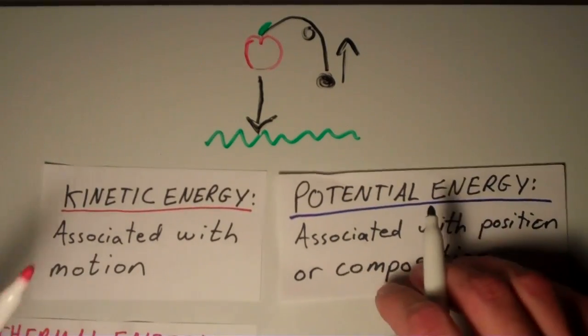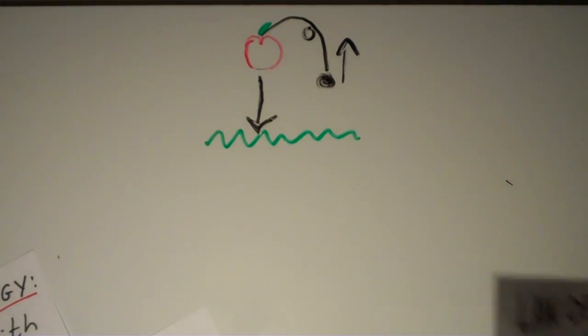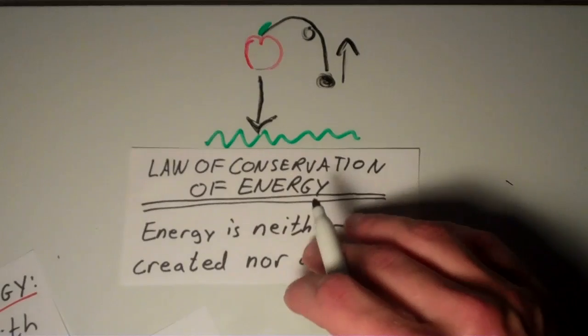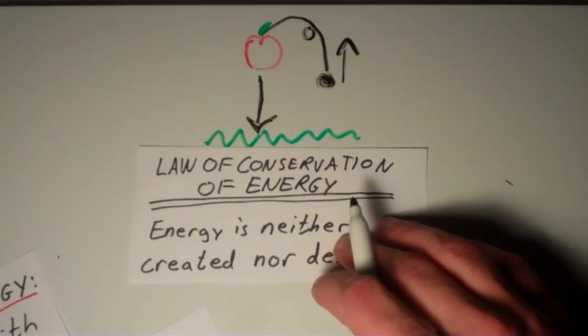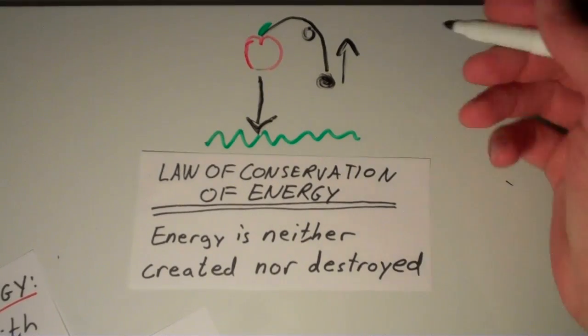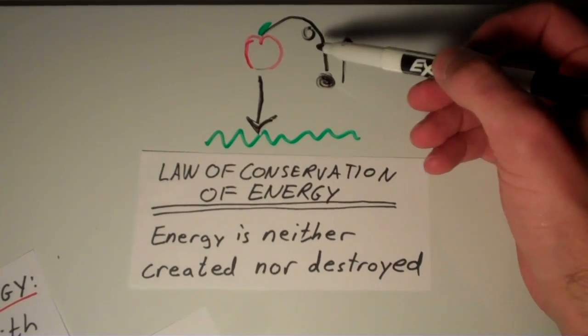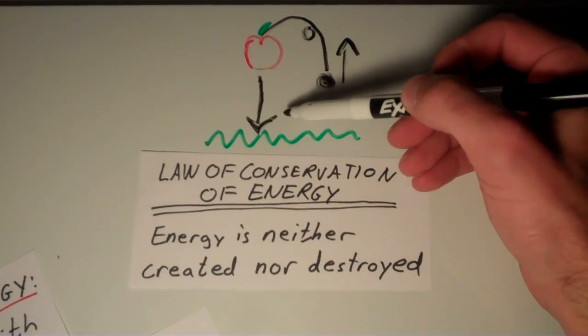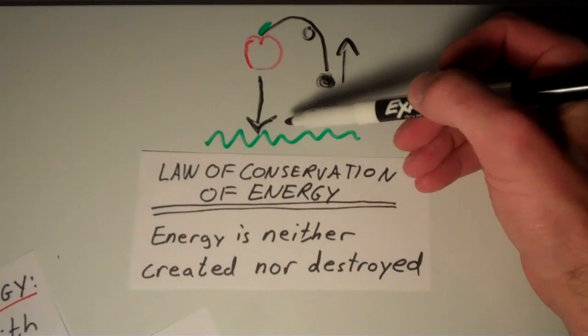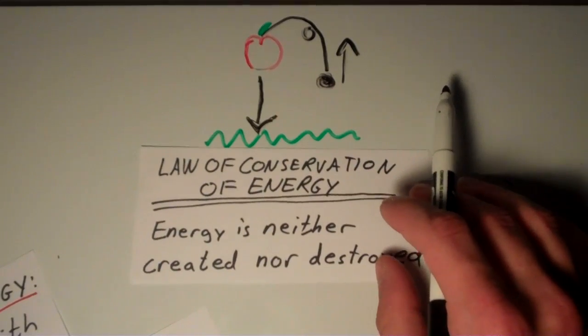So, this leads to a very important principle about energy, which is called the law of conservation of energy. The law of conservation of energy states that energy is neither created nor destroyed. So, one form of energy can be converted into another. For instance, in the case of the apple, the potential energy is converted into kinetic energy. But the total energy remains constant.